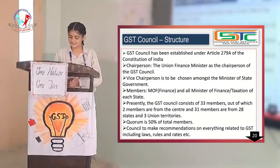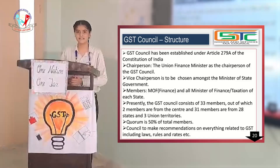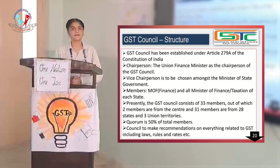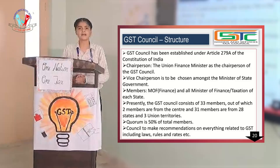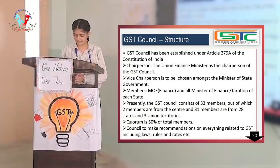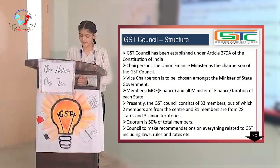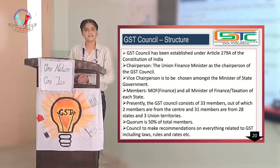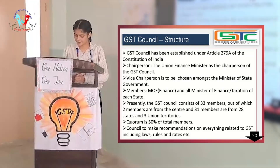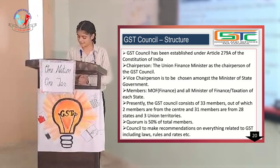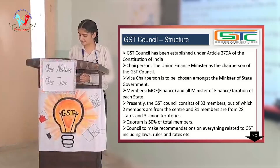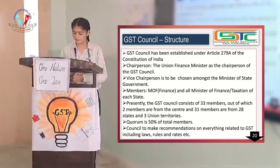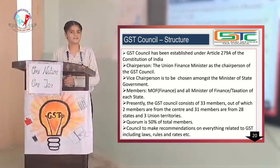Presently, the GST Council consists of 33 members — 2 members from the centre, 28 states, and 3 union territories. The quorum is 50% of total members. The Council makes recommendations on everything related to GST, including laws, rules, and rates. Thank you.